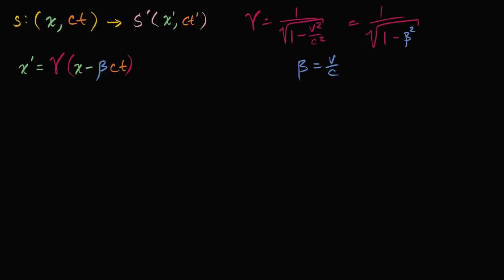And so how do we get ct prime? Well, ct prime is going to be equal to the Lorentz factor times, and once again there's going to be the nice symmetry we talked about, times ct minus beta times x. And like I said before, I like to write it this way because it has this beautiful symmetry. When solving for x prime, it's x minus beta times ct. When solving for ct prime, it's ct minus beta times x, and in both cases I'm scaling by the Lorentz factor.